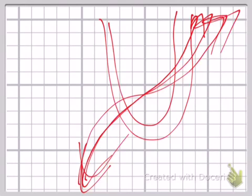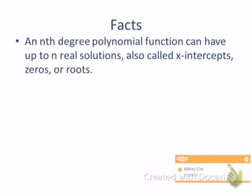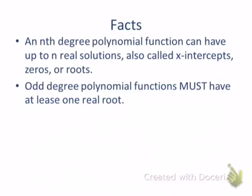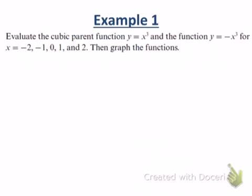So let's make some observations here. An nth degree polynomial function can have up to n real solutions, also called x-intercepts, zeros or roots. Odd degree polynomial functions must have at least one real root. And why did we establish that odd powered functions have to have one real root? Imaginary solutions to polynomial functions come in conjugate pairs. So if it has one imaginary solution, it has two. And that's a couple of facts that we need to know. This is some pretty advanced algebra theory here.